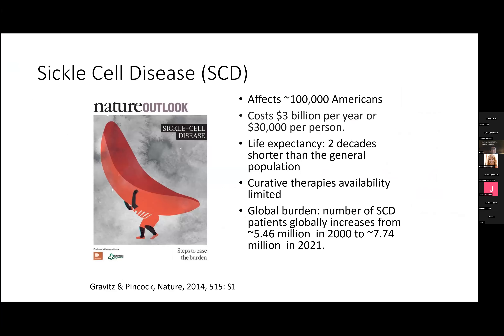The disease I'm going to talk about today is sickle cell disease. Sickle cell disease is a genetic disorder affecting more than 100,000 Americans, costing three billion dollars per year — approximately $30,000 per person. The life expectancy of sickle cell disease patients is two decades shorter than the general population, and currently curative therapy is very limited. The number of sickle cell disease patients has increased globally by approximately 40% within two decades.